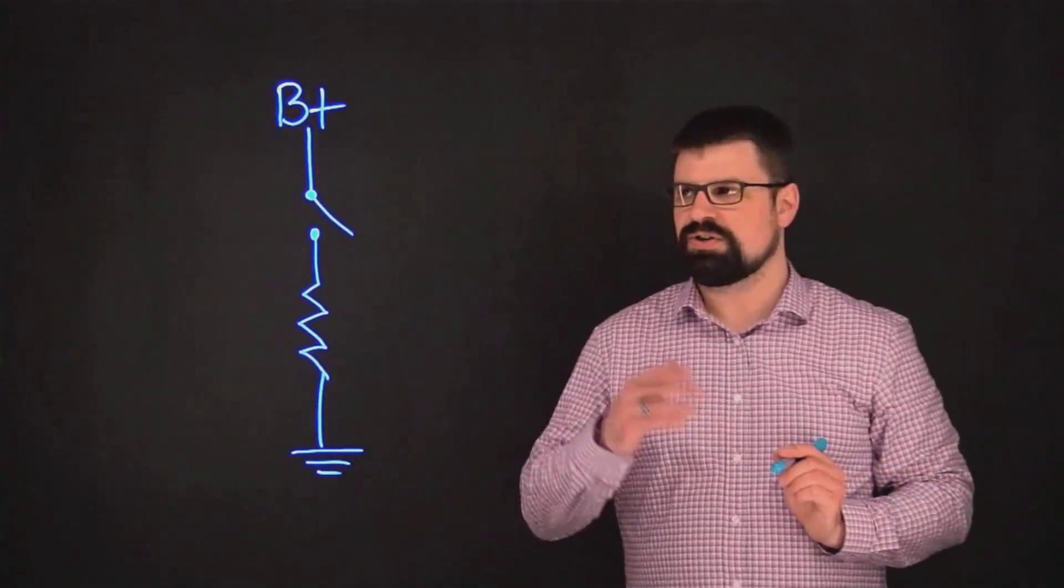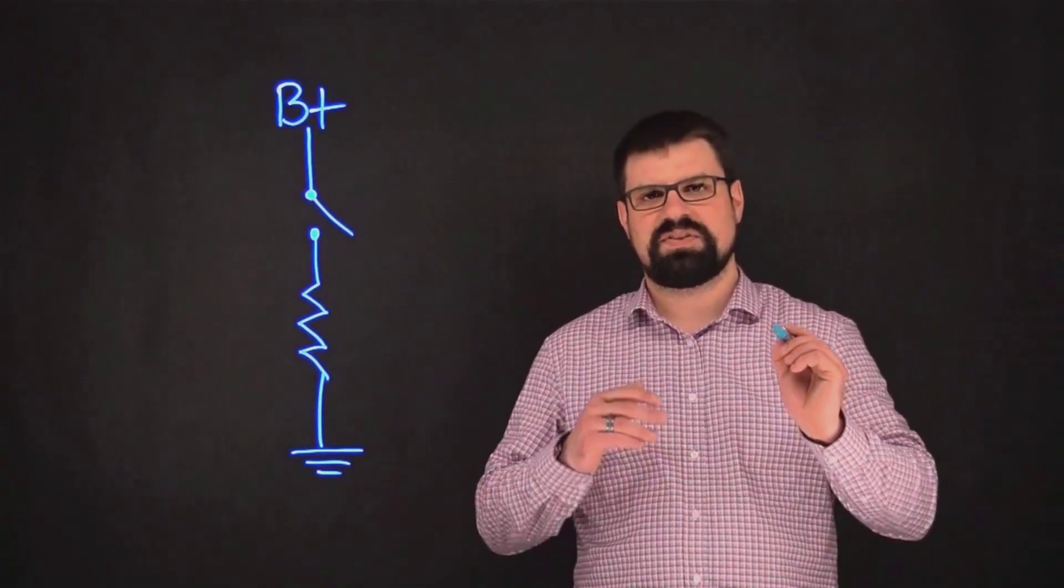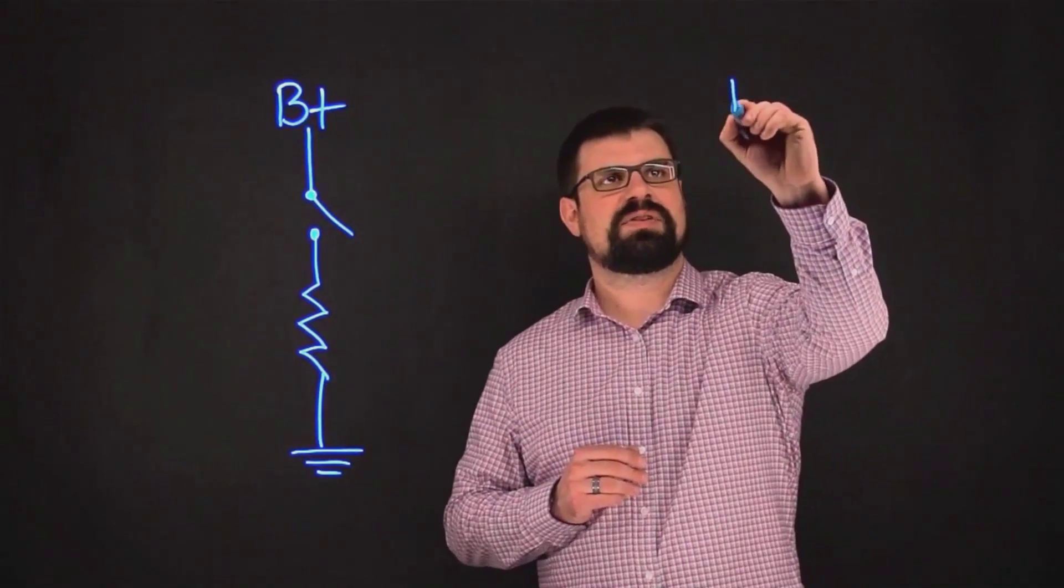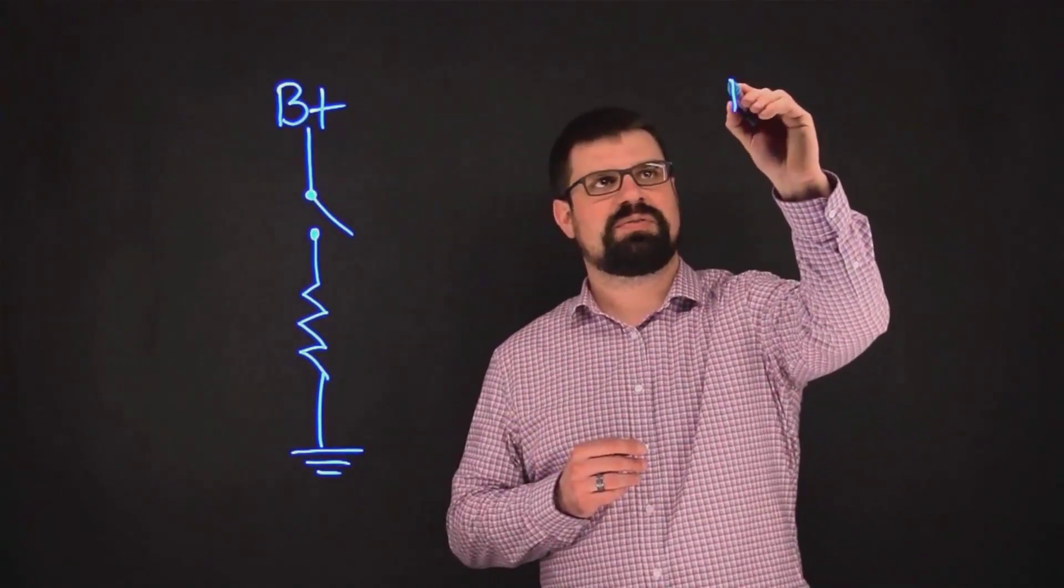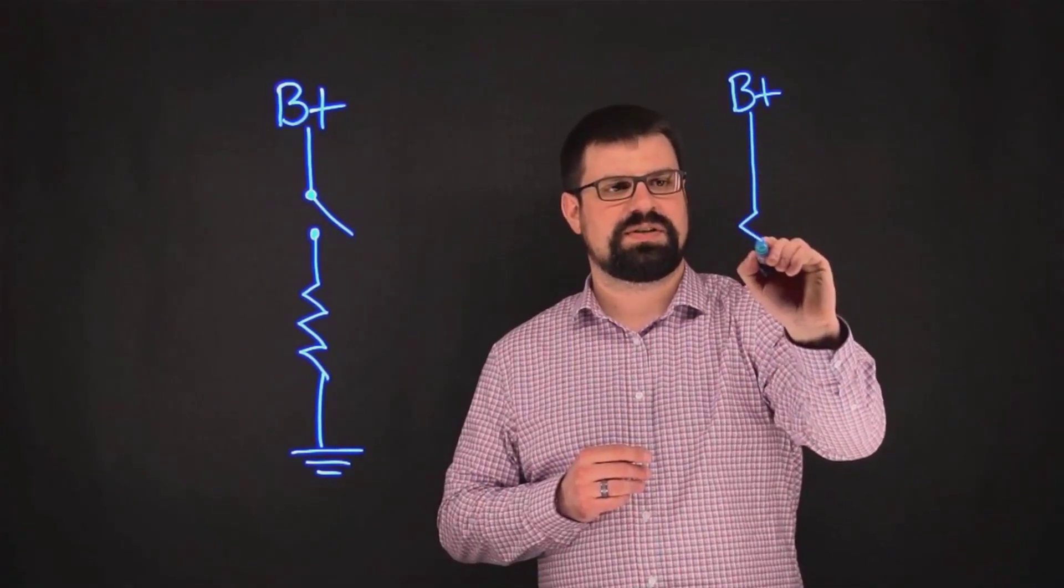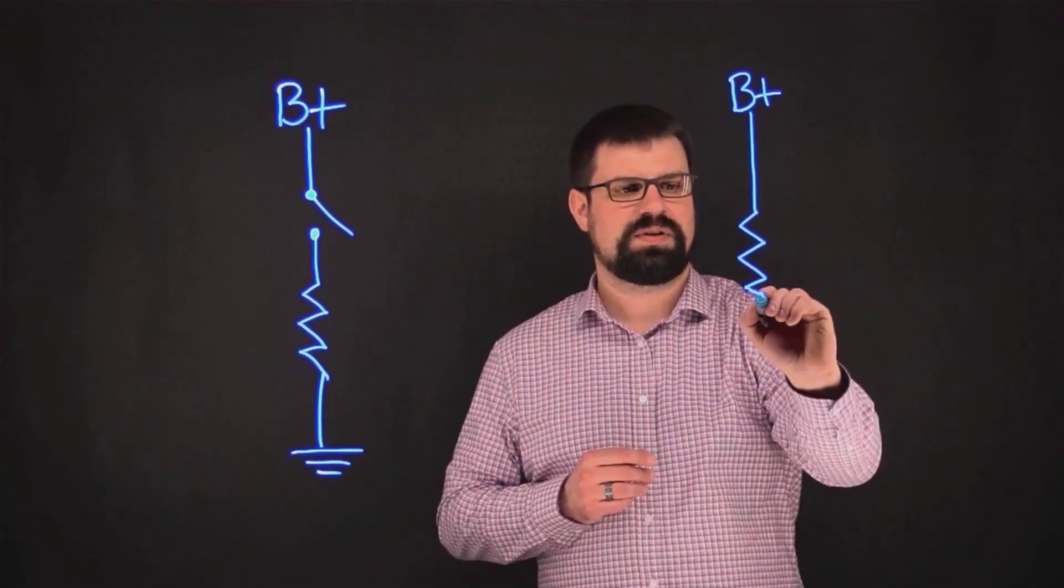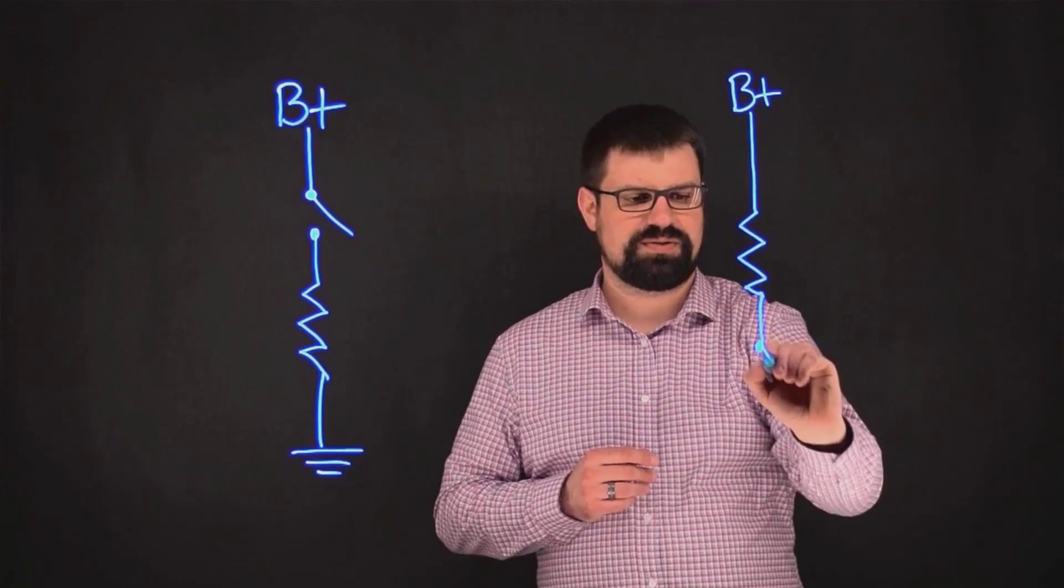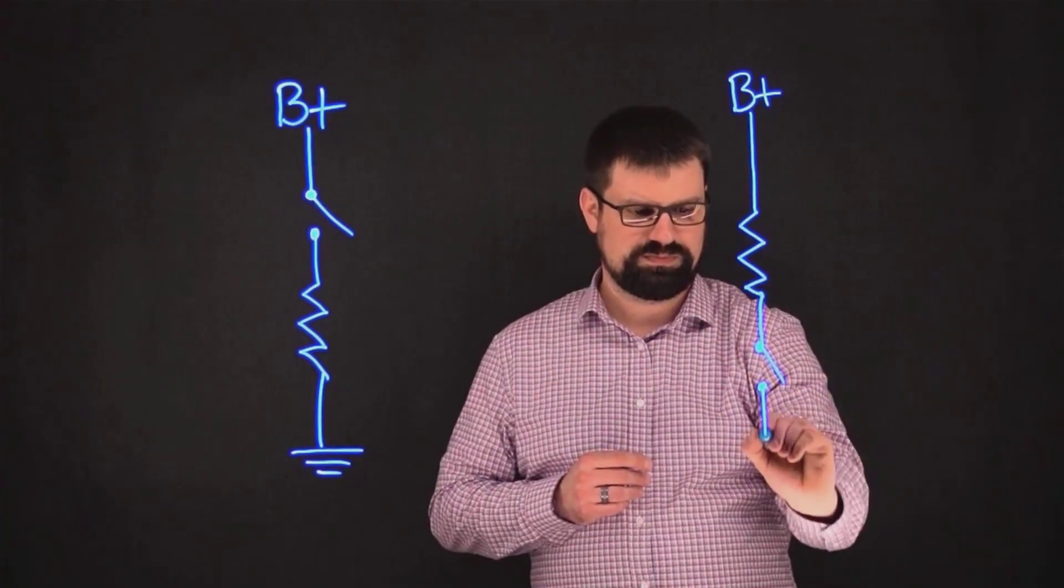Next up, I'm going to go ahead and draw a very similar circuit, but instead of switch power, we're going to make the switch ground. So B plus, we're going to go to the resistor, and then we're going to go to a switch, and then ground.